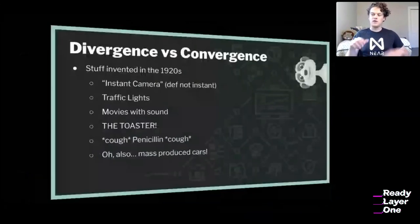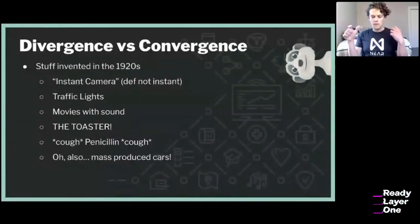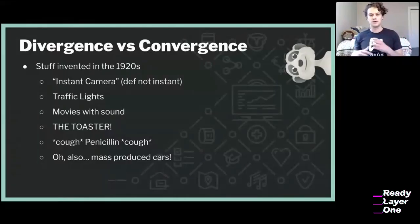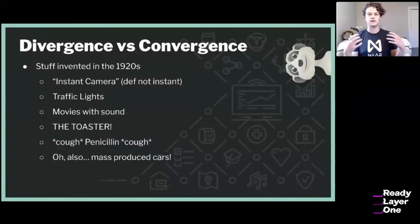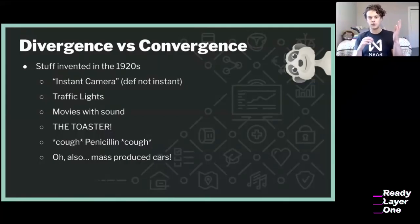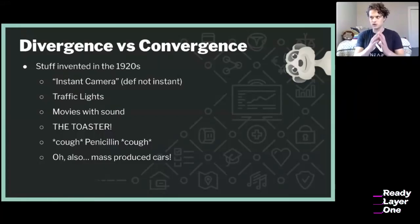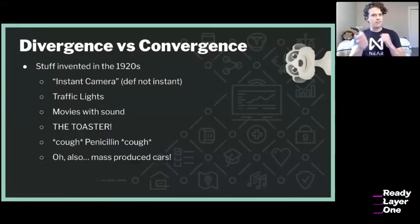The situation we're in right now is a really good example: no one could have predicted the specific events of COVID-19, but people can predict the generalities — that eventually a plague is going to hit the earth. I call these two different directions of prediction: divergence, if the future diverges from the details of your prediction, and convergence, if you basically nailed it.